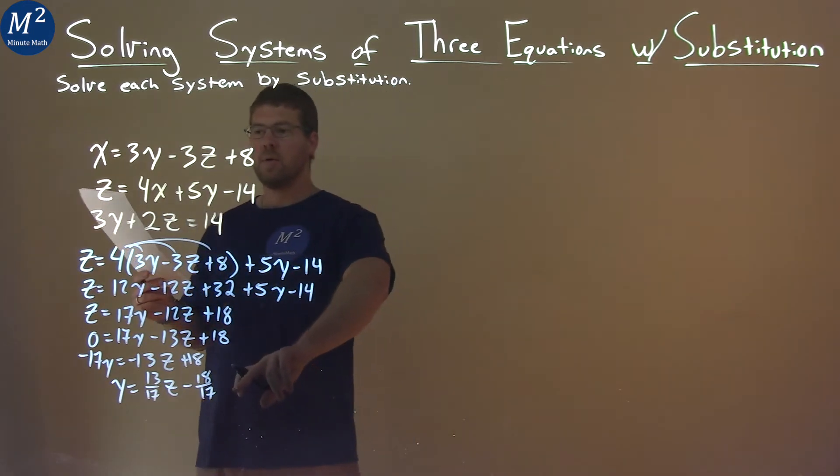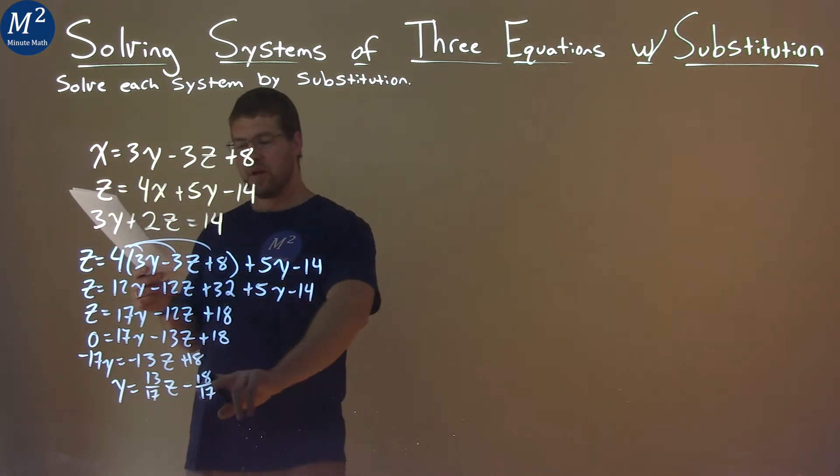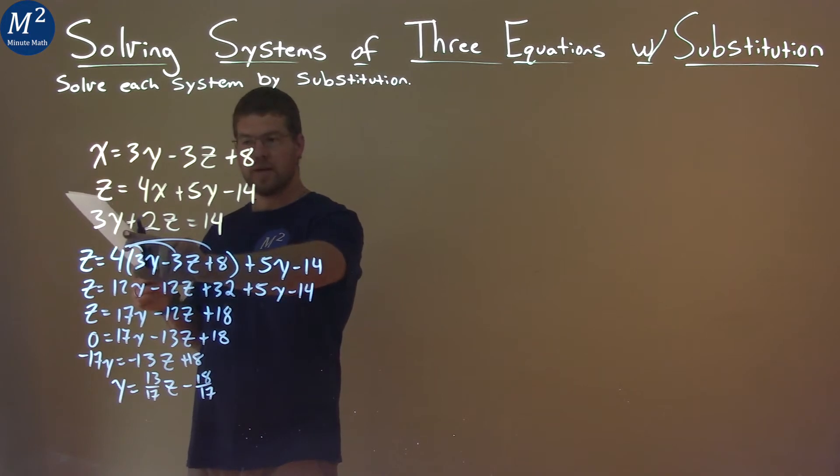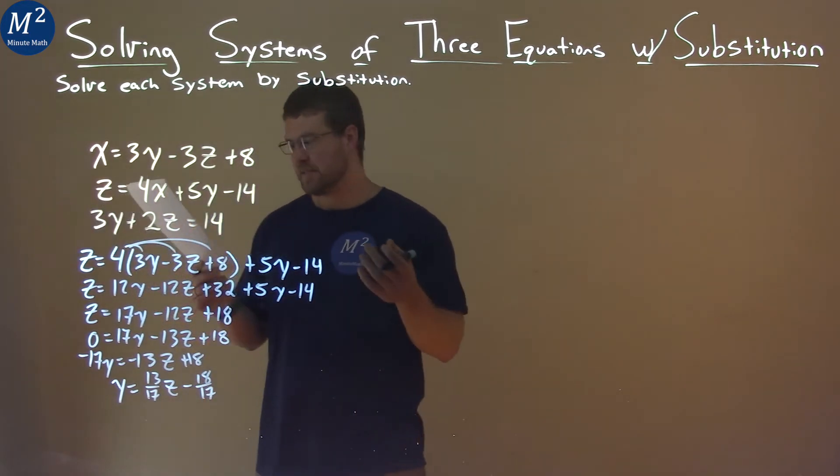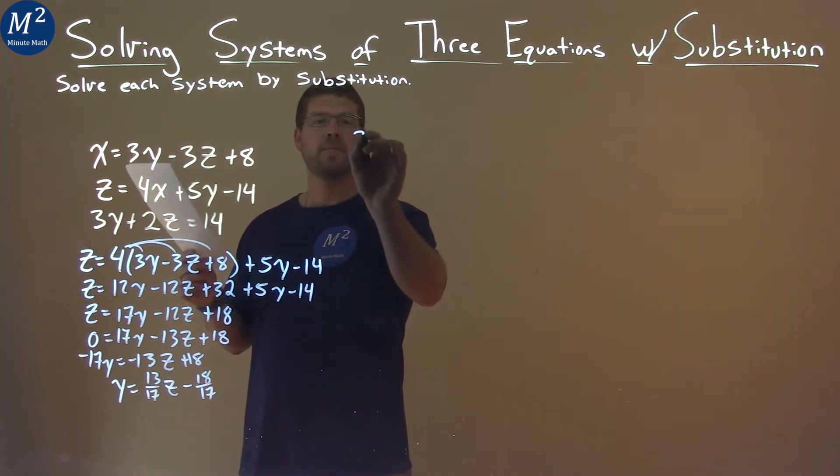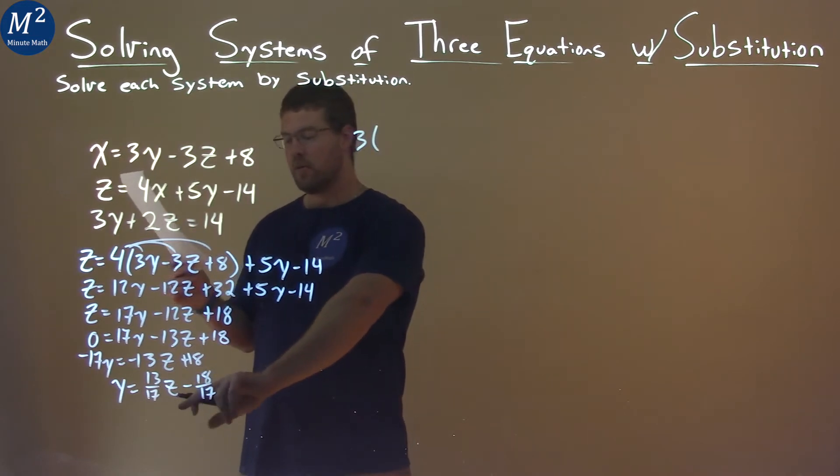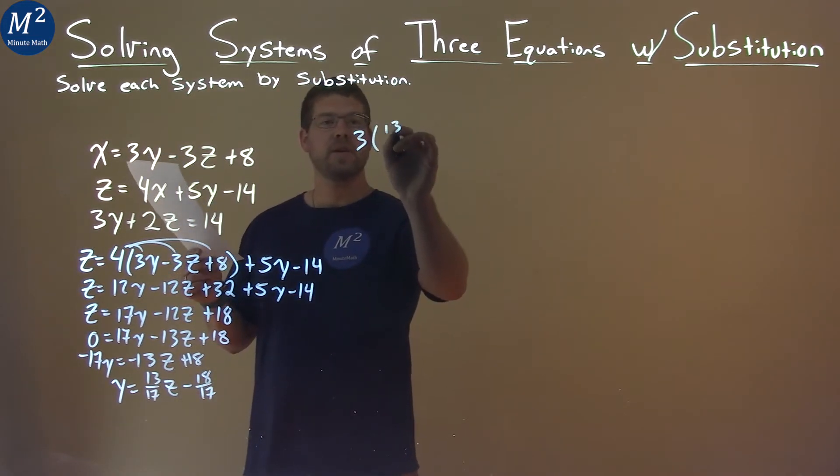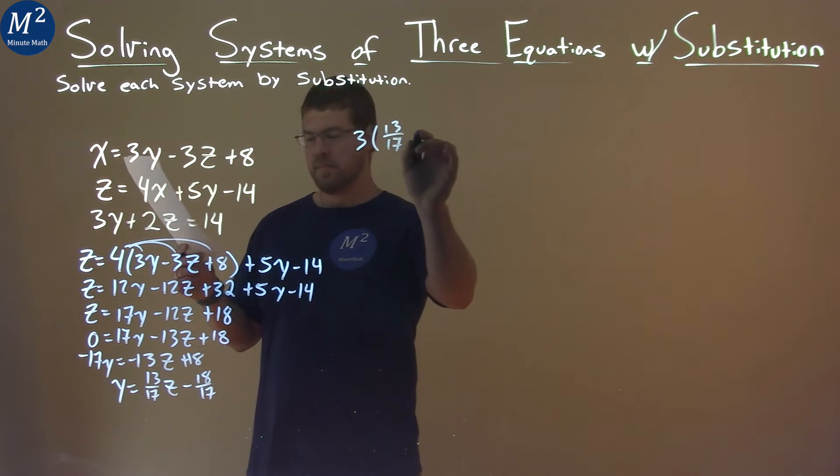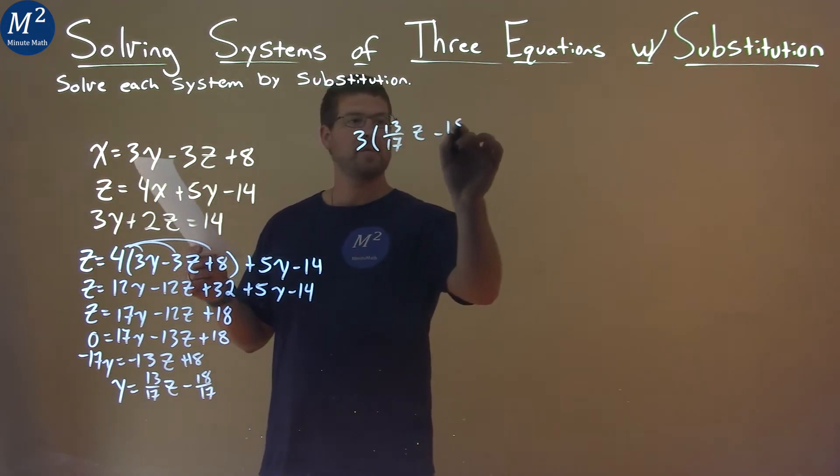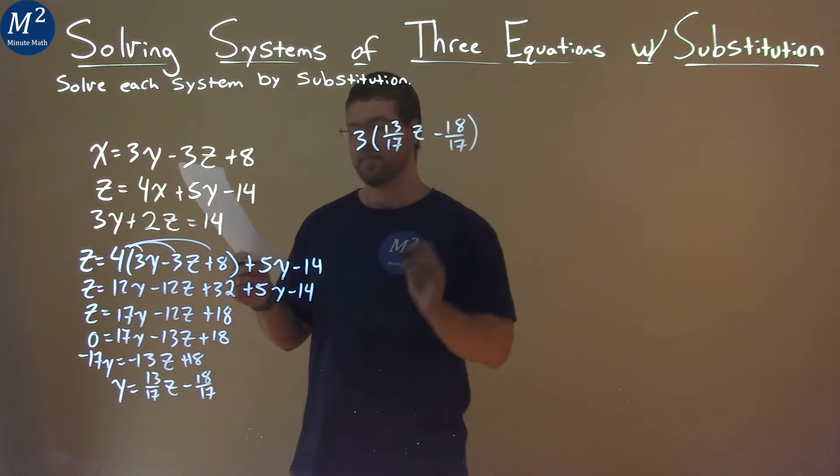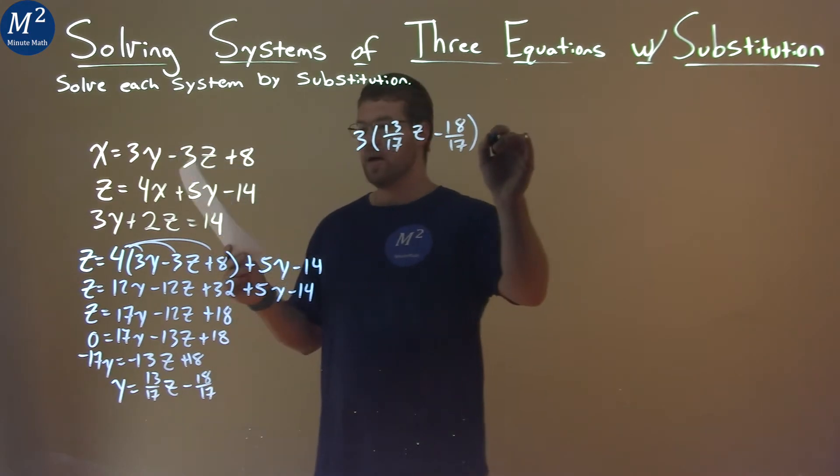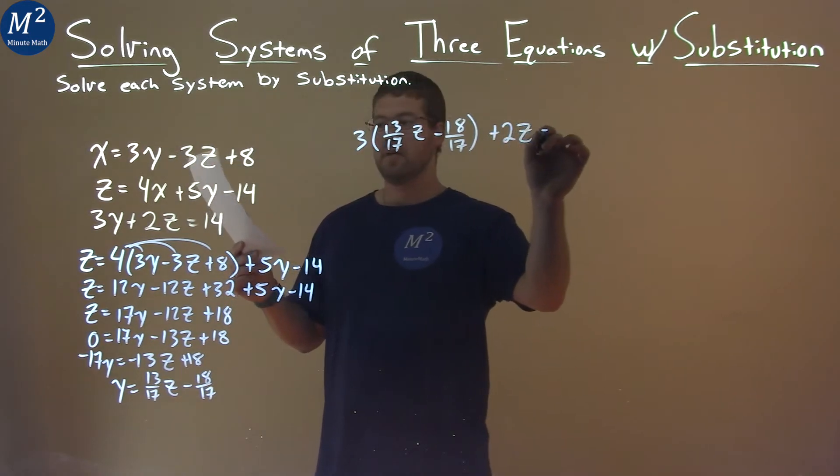So then, we look at our third equation here, okay? And we have plugged this y in for this y here, and we're going to have an equation with only z's. So, we take 3, and instead of y, we put that whole equation we just found. 13 over 17, z minus 18 over 17. Then we plus a 2z here, equals 14.